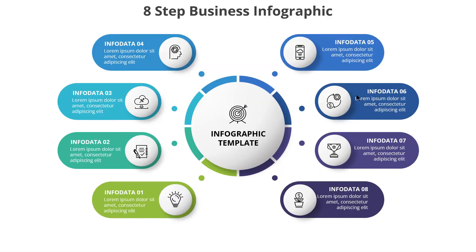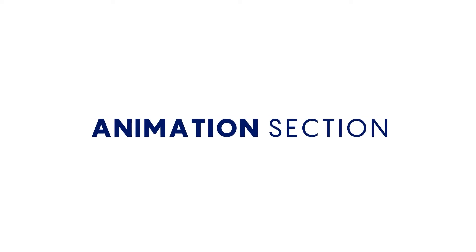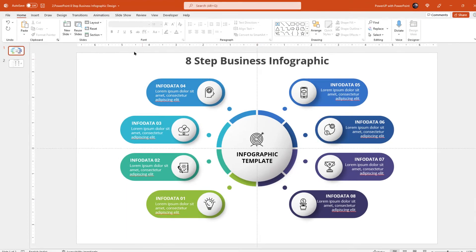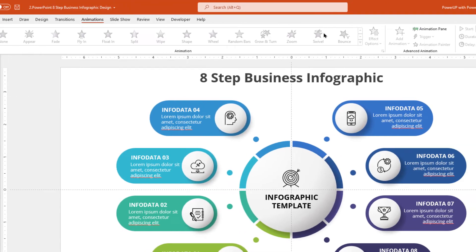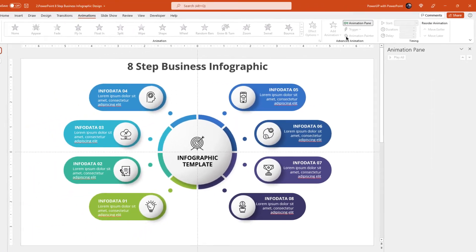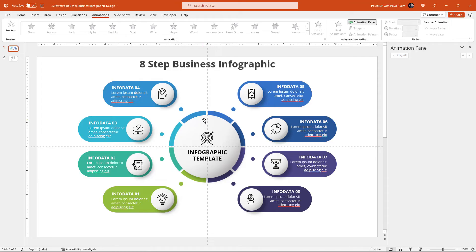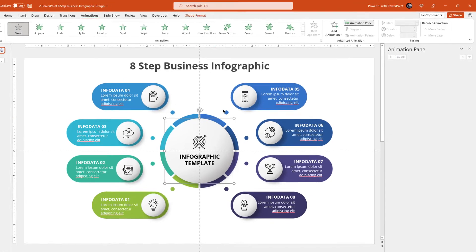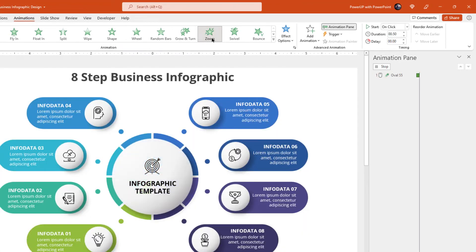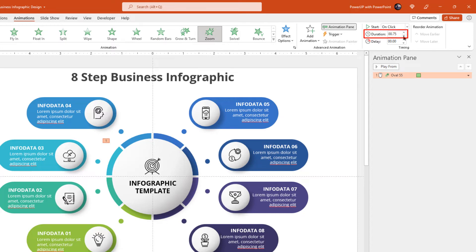So here is the final preview of this beautiful design. Next, we will animate this infographic design. So let's first enable the animation pane and then start our animation process with the center circle shape. Apply zoom animation and increase the duration to 0.75 seconds. This will be the same duration which we are going to use for most of our animations.